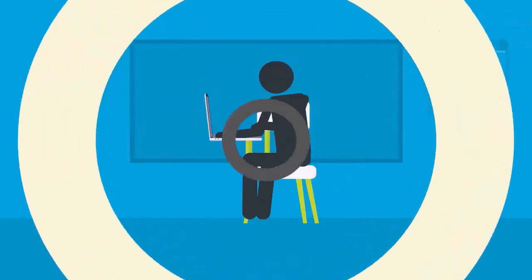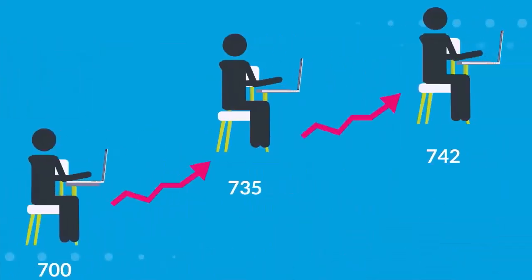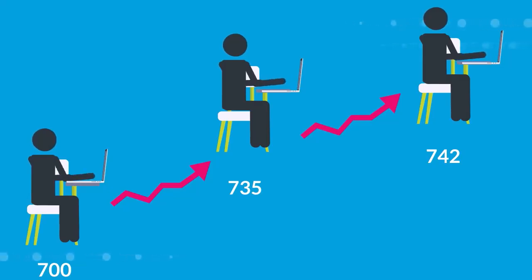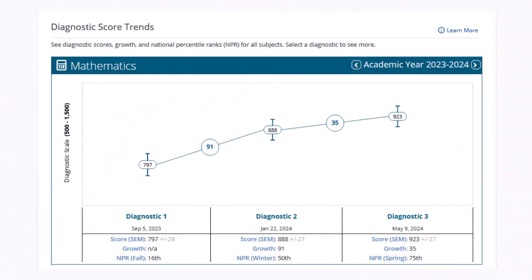Let's look at one student over time through all their assessment administrations this year. As the student learns both in the classroom and through a program like Exact Path, we would expect them to be able to successfully answer more difficult questions, earning a higher scale score, and ultimately allowing us to quantify growth.